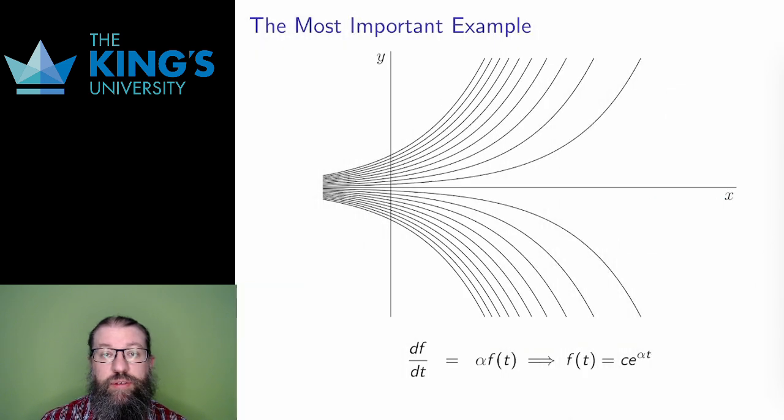The solving of DEs is often built up from basic and important examples. When I talked about DEs in calculus 1 and 2, I likewise started with a core example. So let me remind you of the first and most important of these, the percentage growth equation. df over dt equals a constant alpha times the function f. The solution to the percentage growth equation is the exponential function e to the alpha t with an unknown constant c in front.